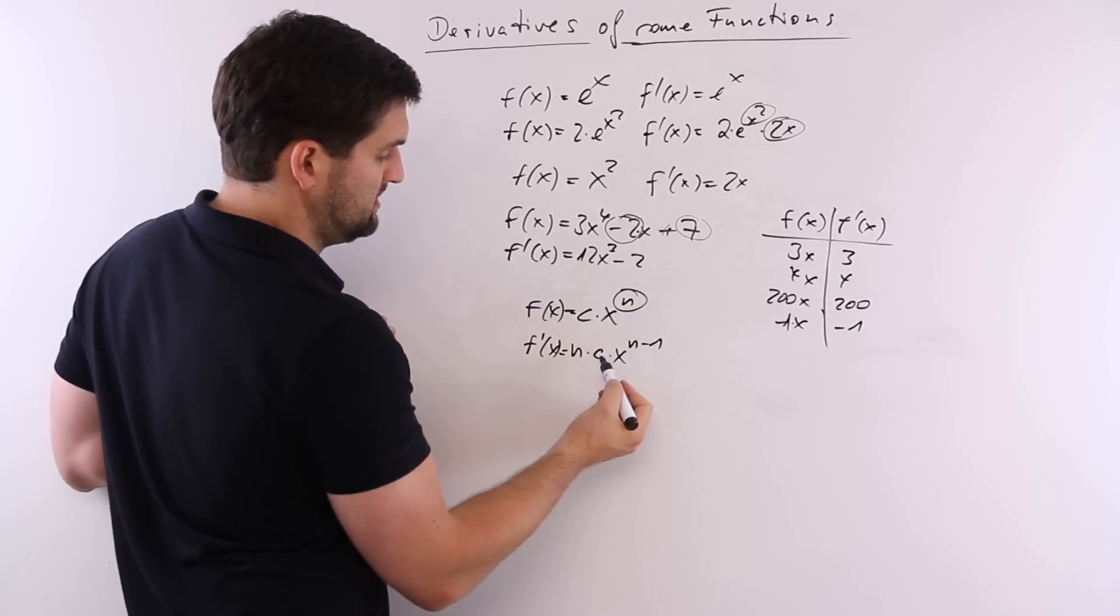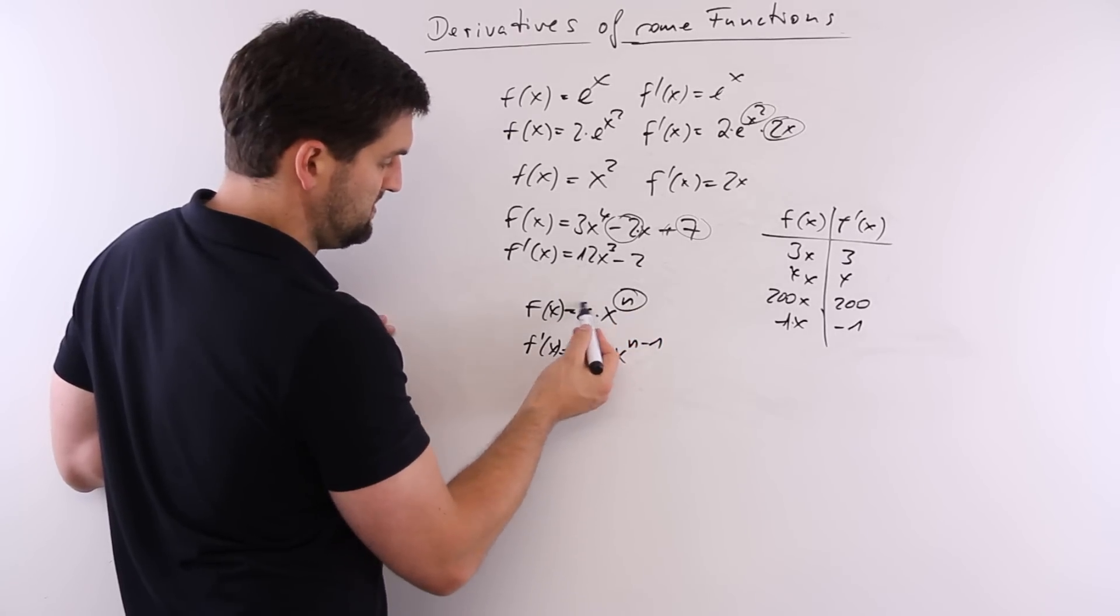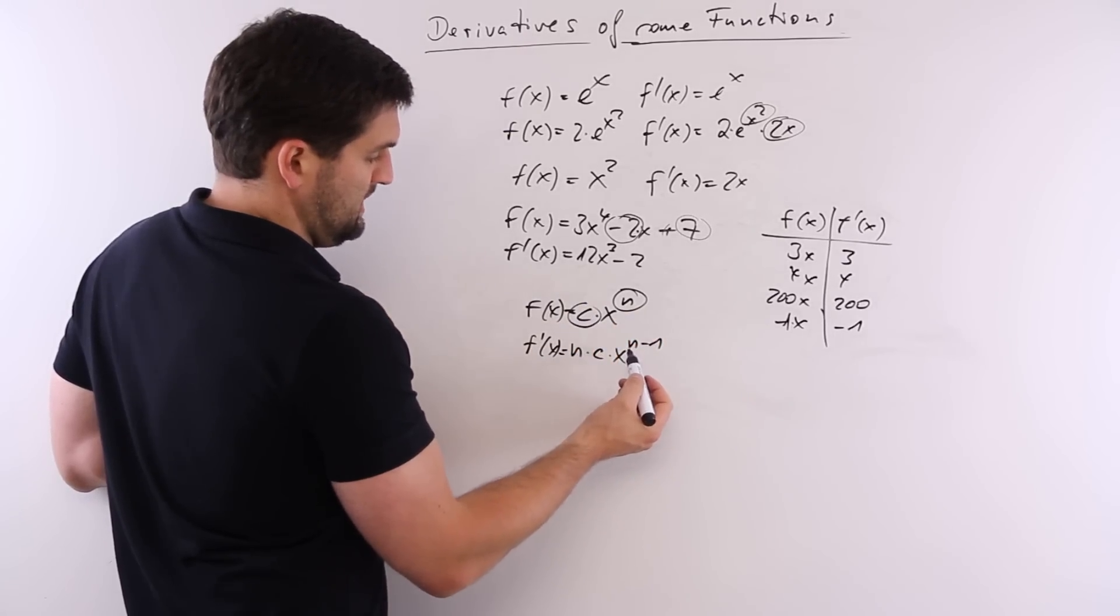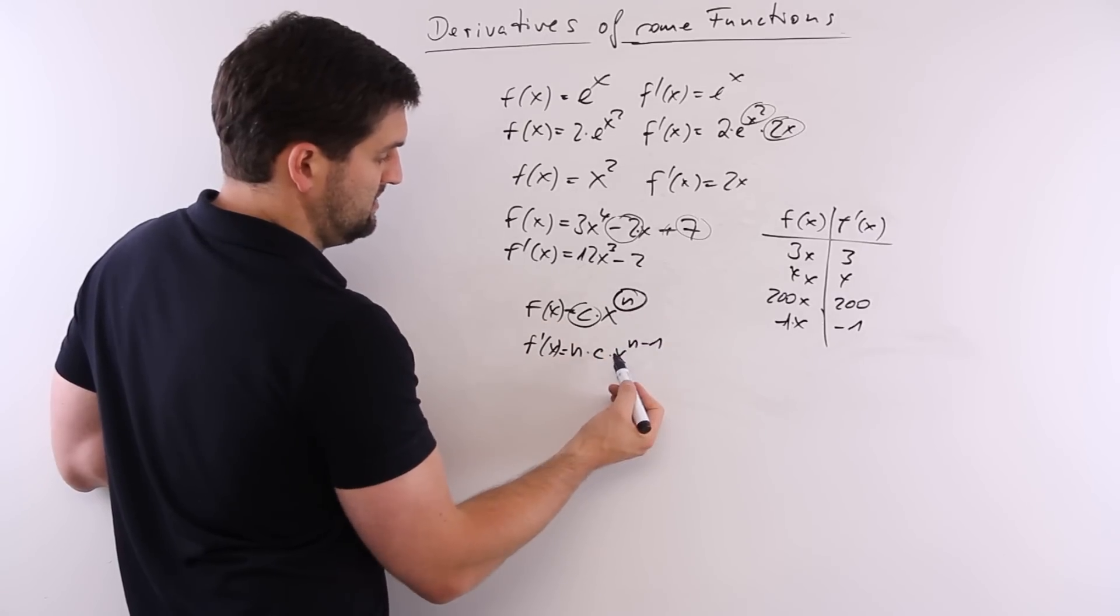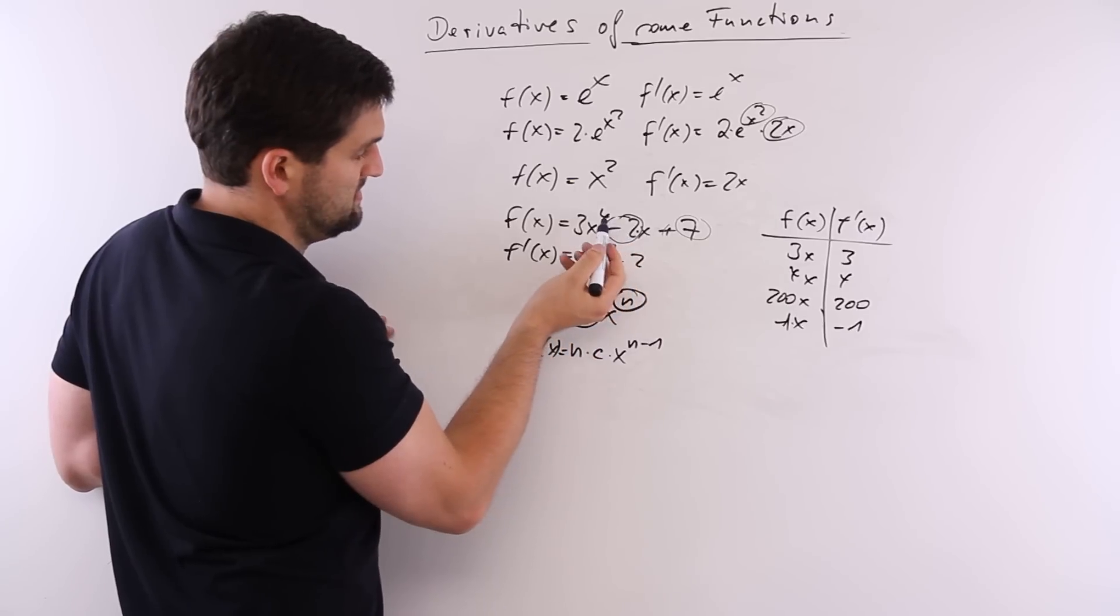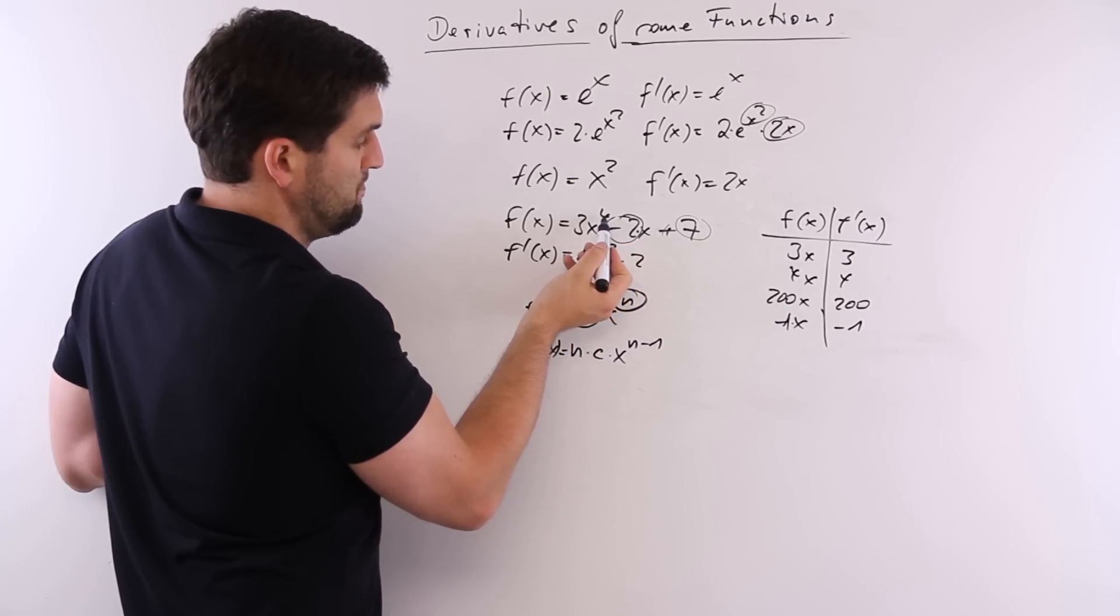So, you take the exponent in the multiplication with the number in front. And the exponent here, in this case, it's 4 minus 1 is 3.